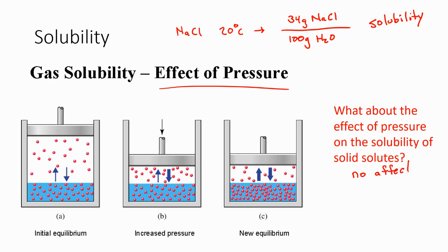So if I tried to dissolve more than 34 grams of NaCl at 20 degrees Celsius in 100 grams of water, it really wouldn't matter what the pressure is. It could be high or low, I'm still going to dissolve about 34 grams.